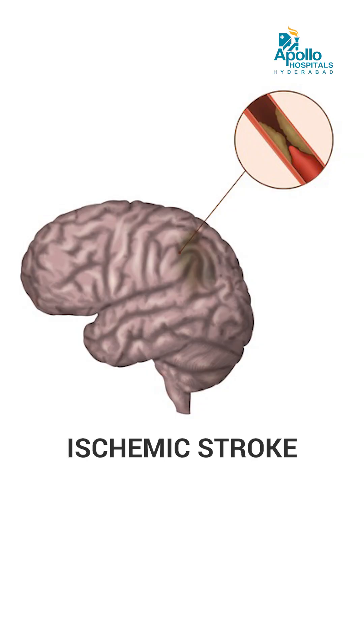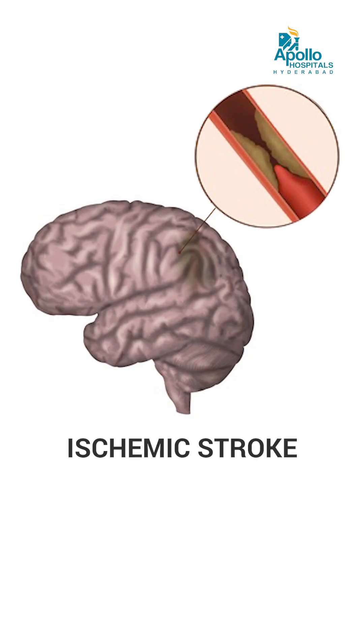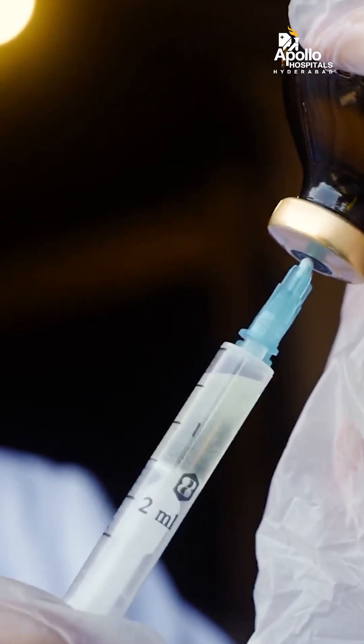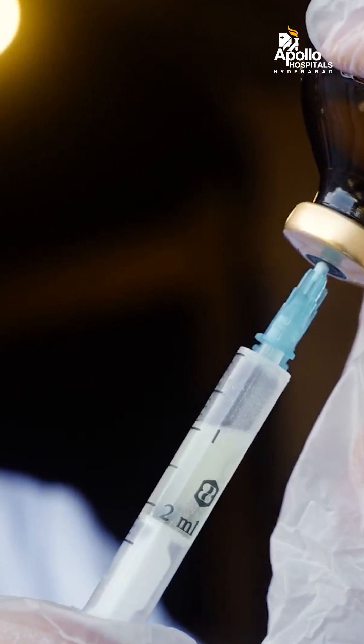In cases of stroke there are two types. One is ischemic stroke where the blood supply of the brain gets blocked. In those patients, if they come within the first four and a half hours, we have a medicine which can be given by injection to dissolve the clot.